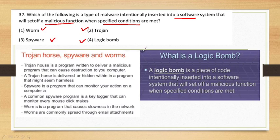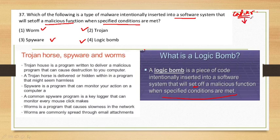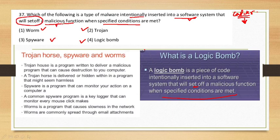Basically, a logic bomb is one we consider intentionally installed in our system so that there is a harmful function that will set off when specified conditions are met. For example, if confidential information on a computer should not be leaked to the public, a software will be installed so that if someone tries to access that computer, the confidential information will automatically be removed. So basically, malware is a type that we intentionally insert — it will set off a harmful function when some specified conditions are met.